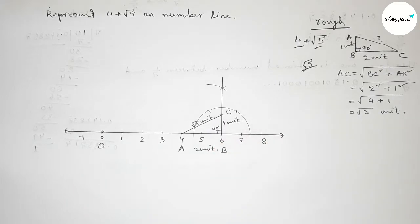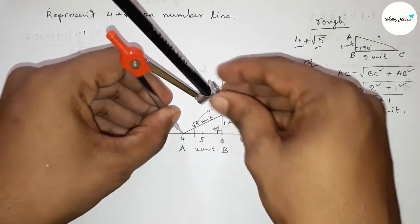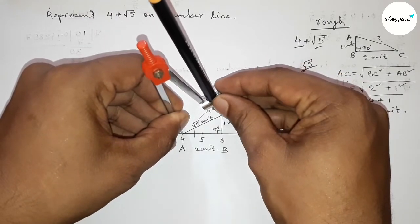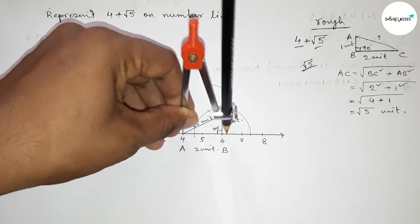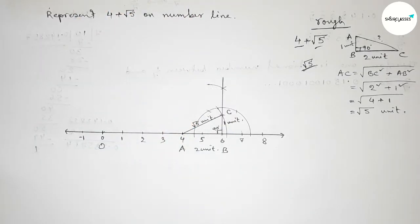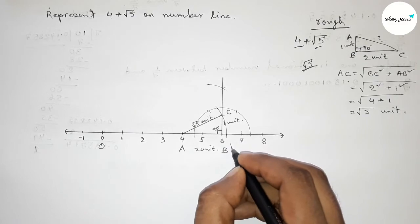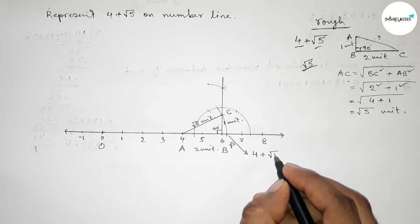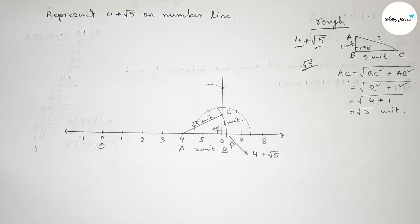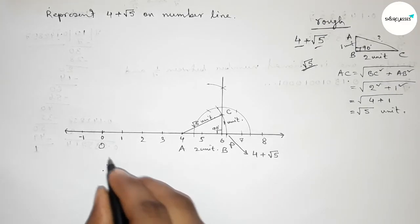Now taking the length AC equal to √5 unit length and drawing an arc through the point C which made the number line at a point here. So taking point P and this is 4 + √5 on number line. So therefore,